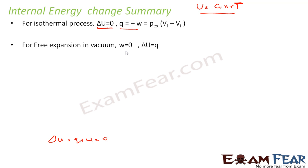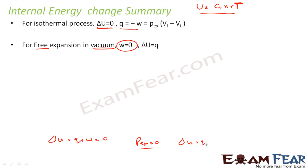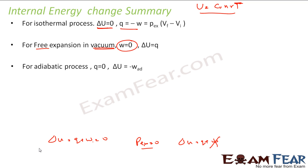For free expansion of gas in vacuum, work done is zero because P_external = 0. Work done = P_external times delta V, and since P_external = 0, W = 0. So delta U = Q + W = Q + 0 = Q. For an adiabatic process, there is no heat transfer, so Q = 0. Therefore delta U = W.